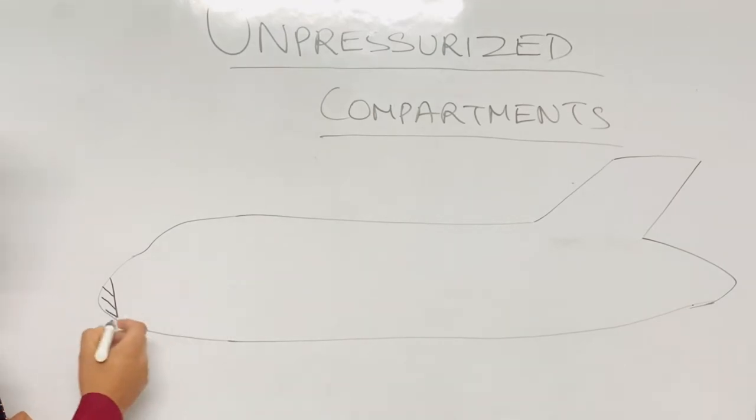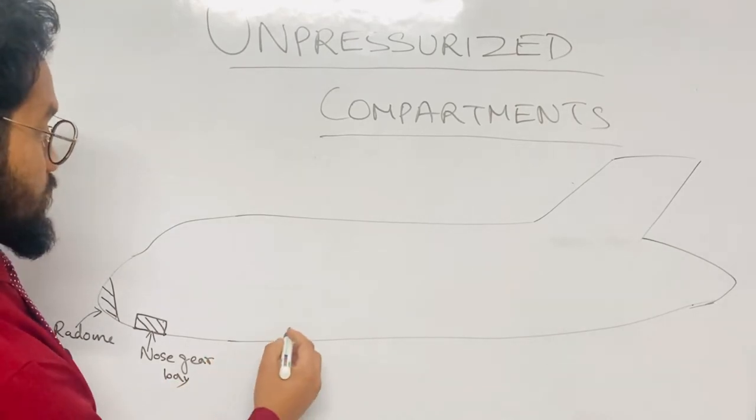The next unpressurized area is the nose gear bay. Okay, this one. So this area is also unpressurized. This is the nose gear bay.